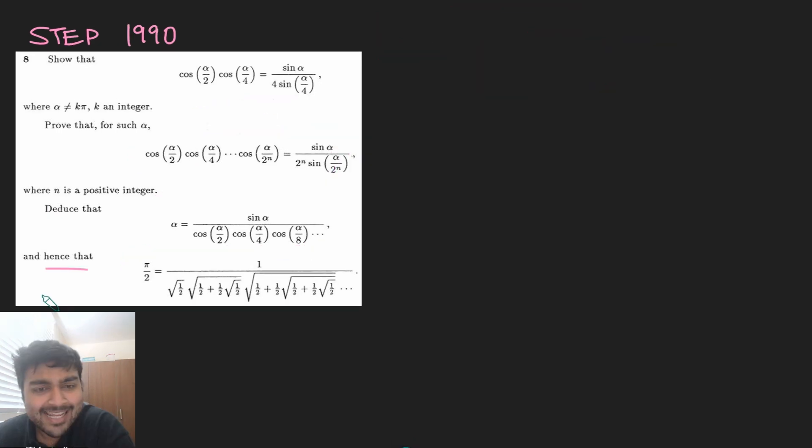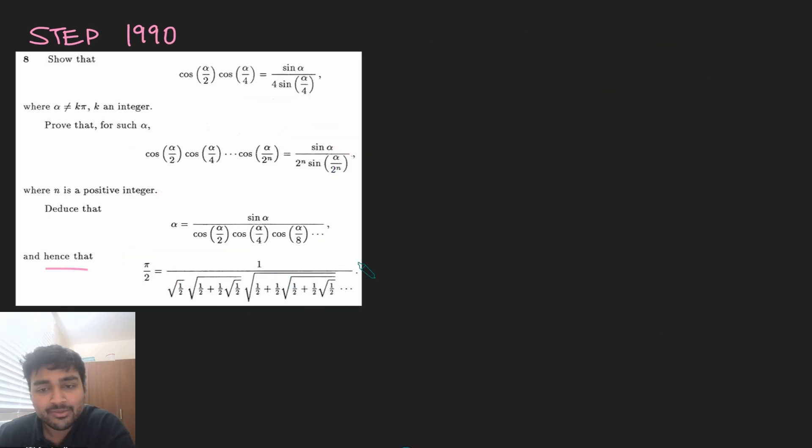Let's move on to the final part. And hence that pi over 2 equals this beautiful reciprocal nested fraction product thing here. Again, this question starts with hence, so we want to use this previous part. And it's pretty much you just plug in a value of alpha. And it's pretty clear here we want to plug in alpha is pi by 2 to get pi by 2 on the left side.